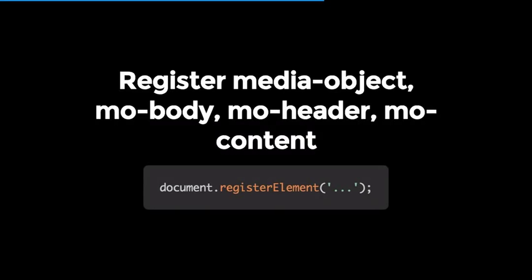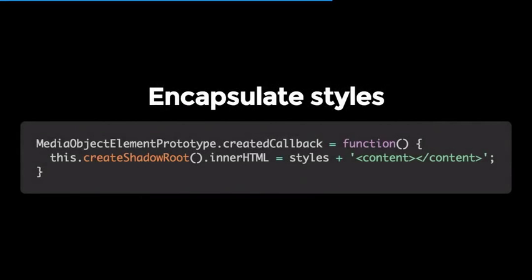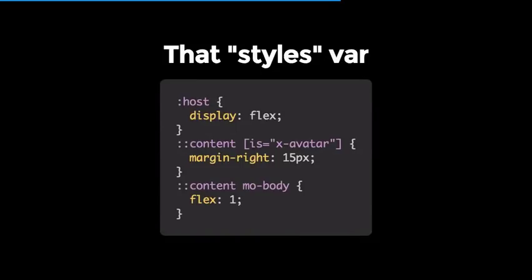We use a link to pull in our avatar element using HTML imports. We register all the other elements — media-object, media-body, header, and content. To encapsulate our styles, in the createdCallback of the parent media-object element we create the shadow DOM on it, inner HTML some styles as a string of CSS, and preserve the existing content. The styles use :host to target the media object as a flexbox container — because flexbox is awesome — then the distributed content, which is the avatar living in the light DOM, gets a default margin of 15px, and the body is set to flex: 1 to fill the rest of the space.